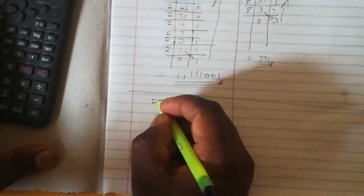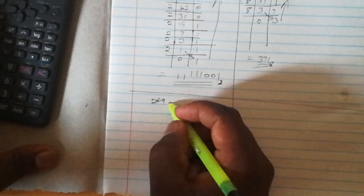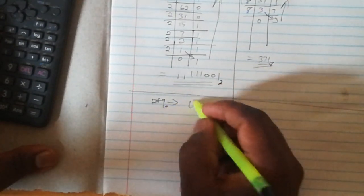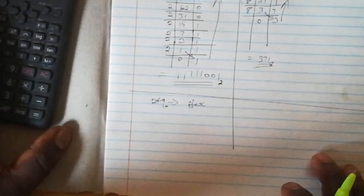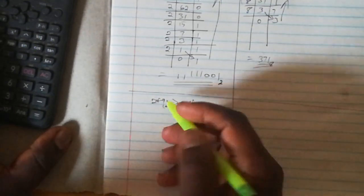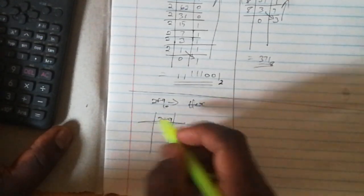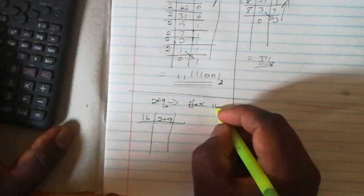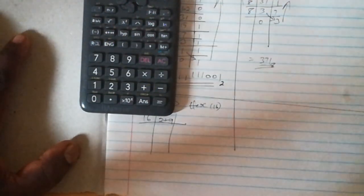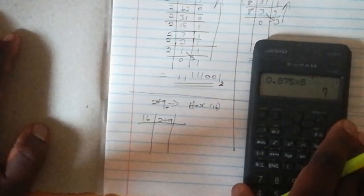Lastly, I'm going to work out the conversion from decimal to hexadecimal. Let's see 249 to hexadecimal. In the same way, we'll be dividing 249 by 16, which is the base for hexadecimal. With the help of our calculator again, we'll be doing this sum.